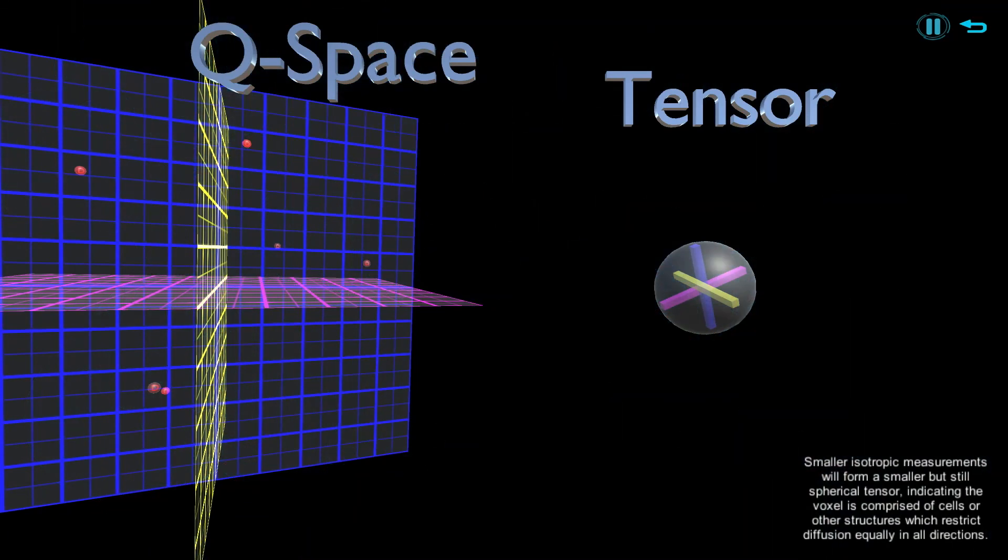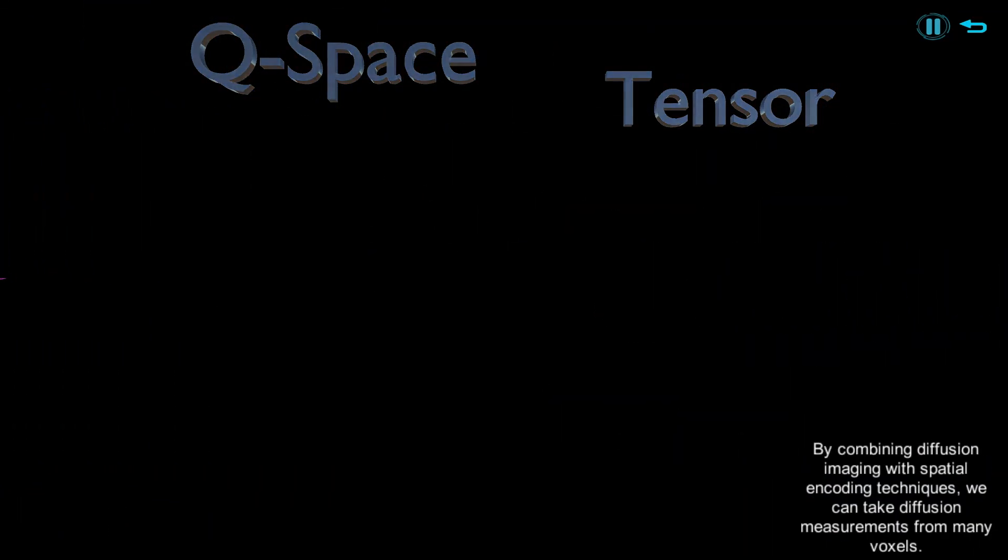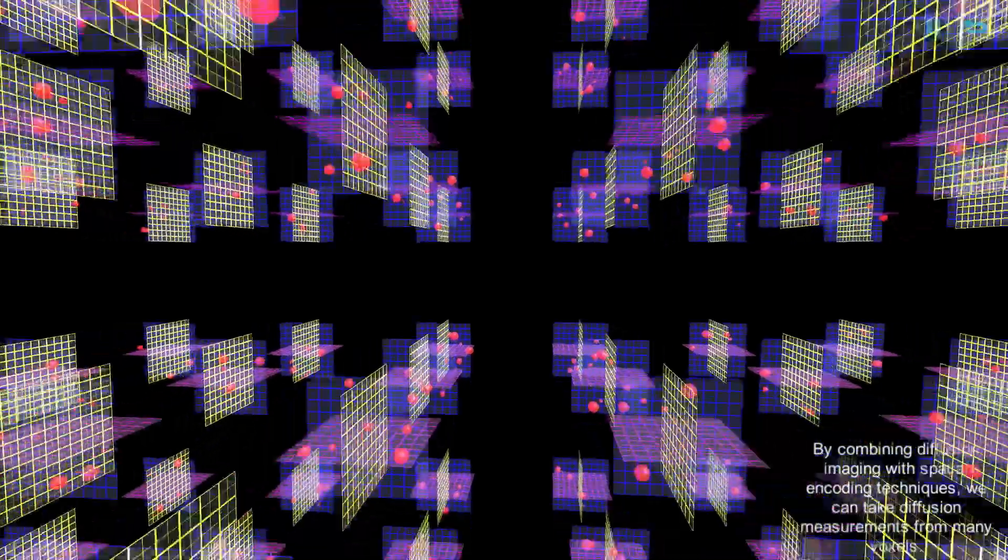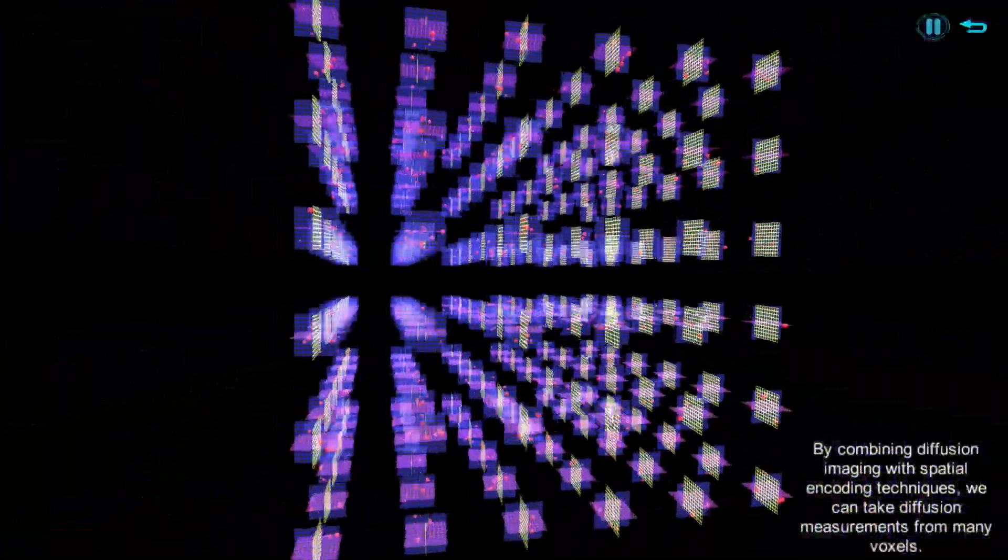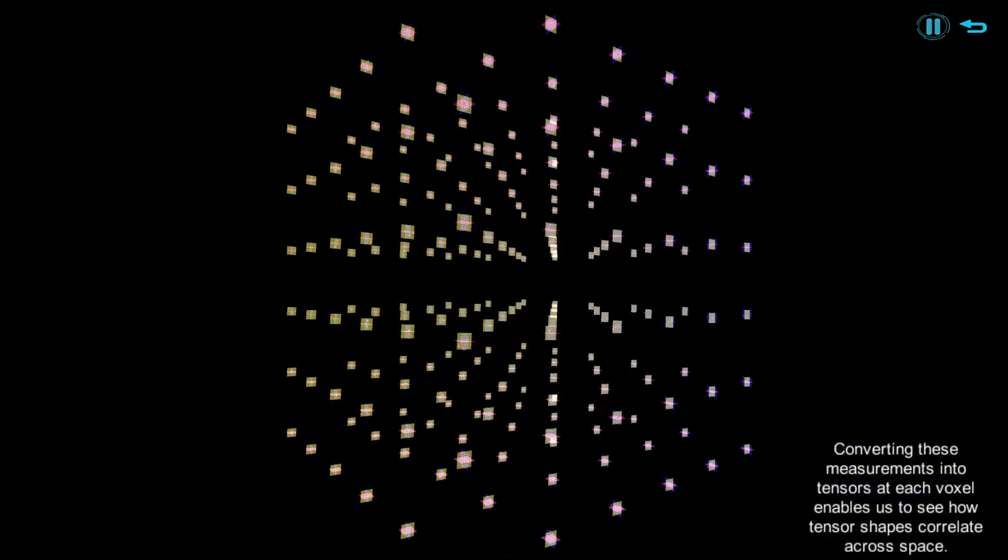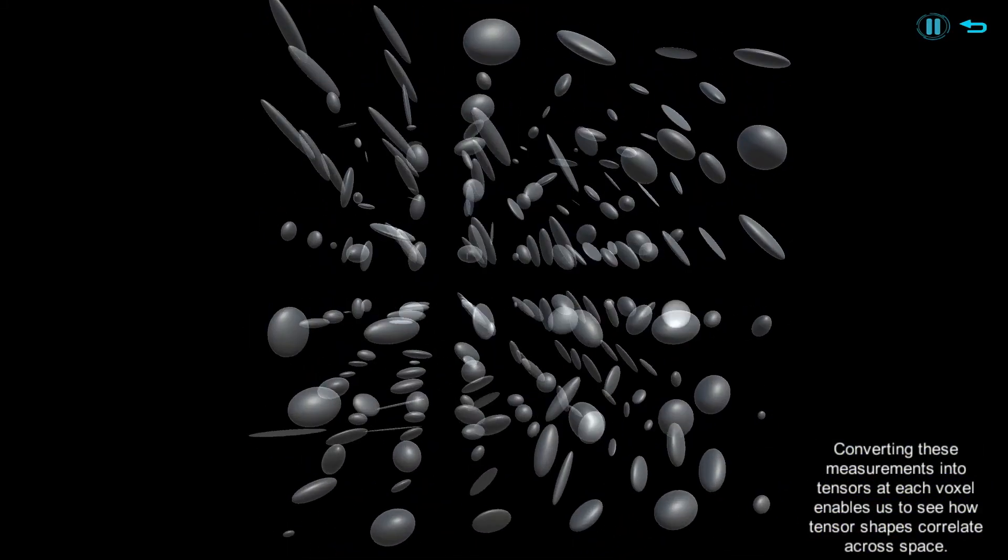By combining diffusion imaging with spatial encoding techniques, we can take diffusion measurements from many voxels. Converting these measurements into tensors at each voxel enables us to see how tensor shapes correlate across space.